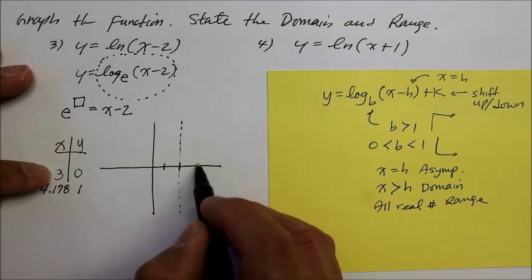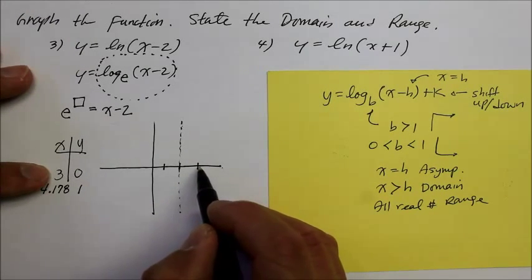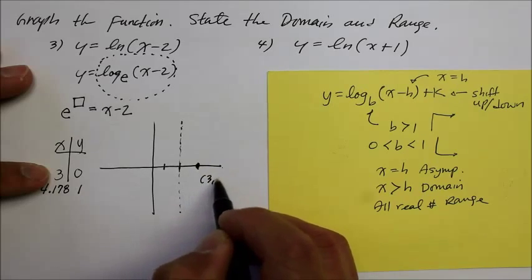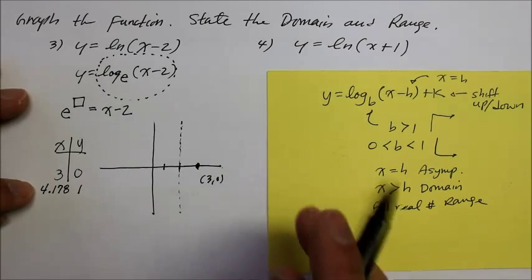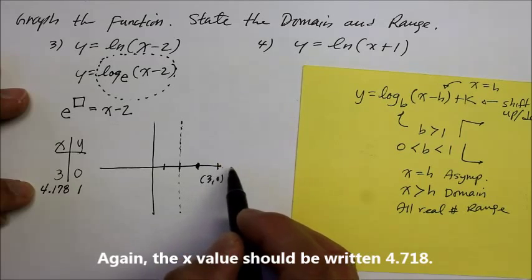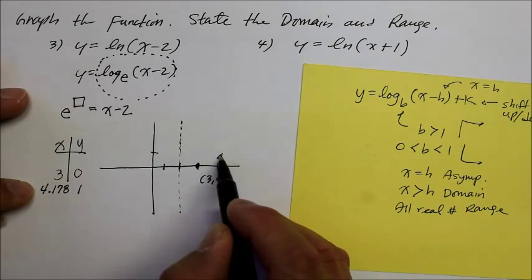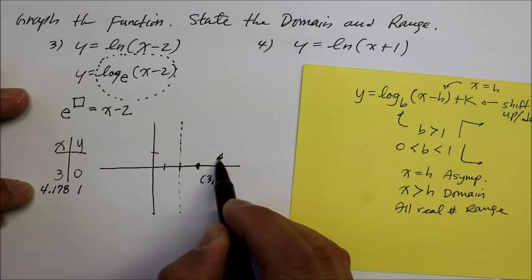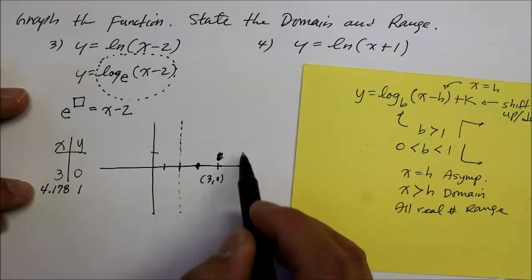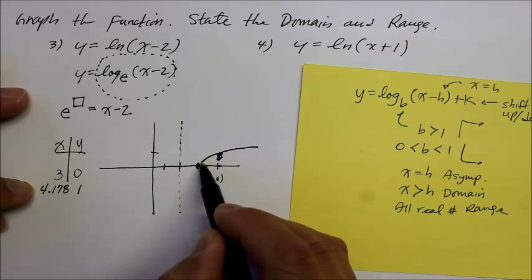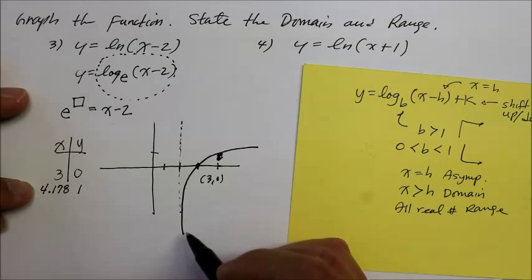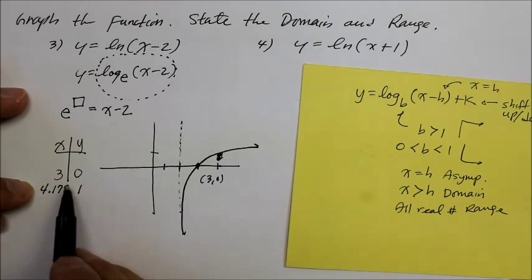So let's plot the points that we have. If x is 3, there it is, then y is 0. There's my 3 and 0. If x is 4.718, so here's 4, 4.718 is like over here somewhere, then y is 1. So that 4 got in the way, but you know what I mean. There it is. So now if I draw the graph, it should look something like that. That's how I choose these numbers.